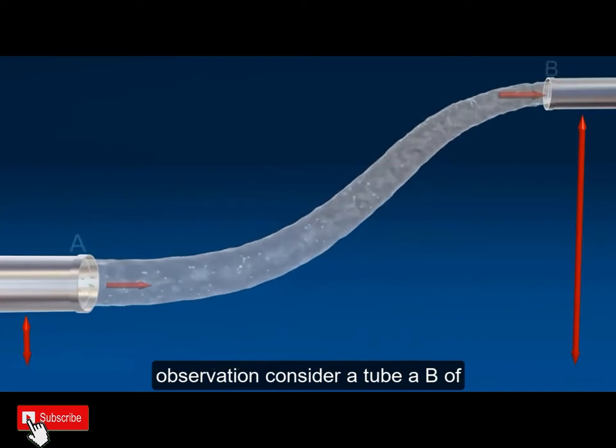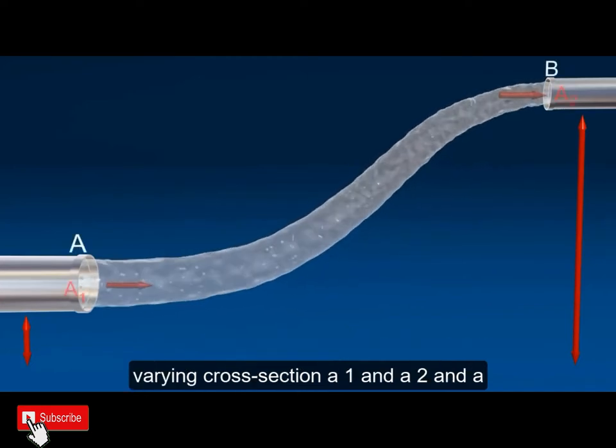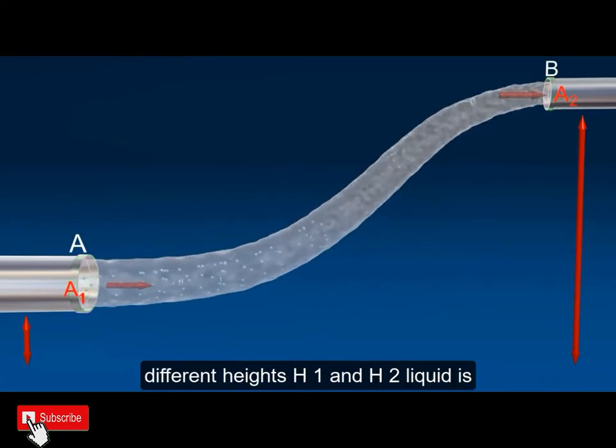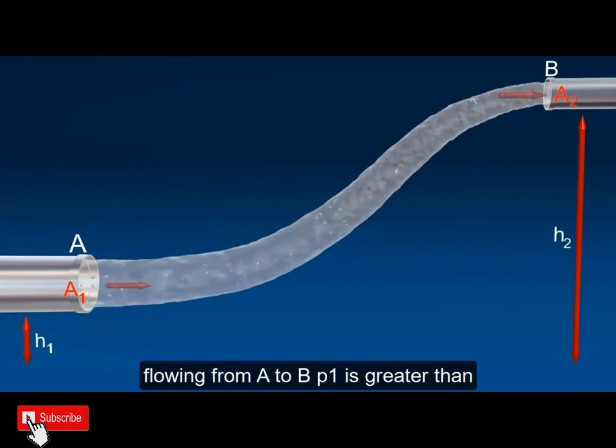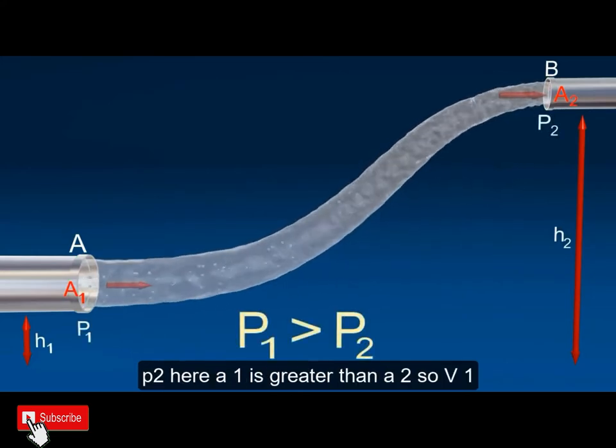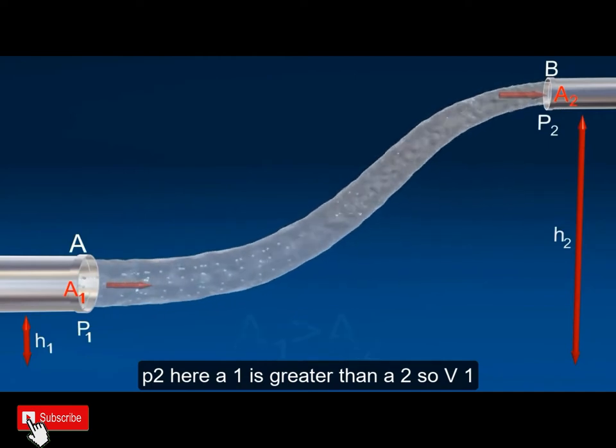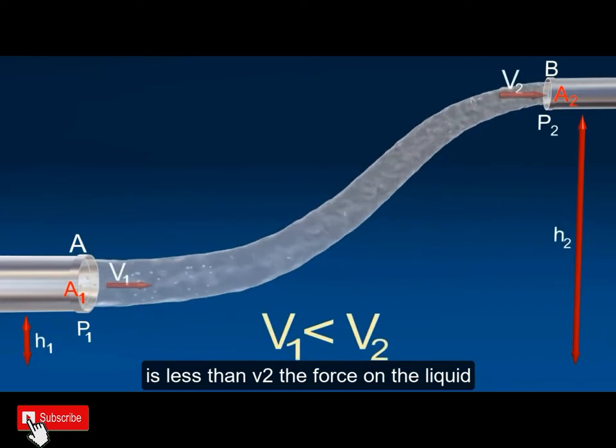Consider a tube AB of varying cross section A₁ and A₂ and at different heights H₁ and H₂. Here, liquid is flowing from A₁ to A₂. Here, A₁ is greater than A₂, so V₁ is less than V₂.